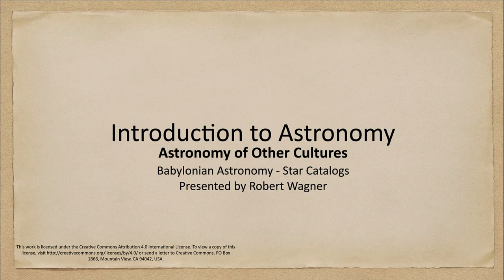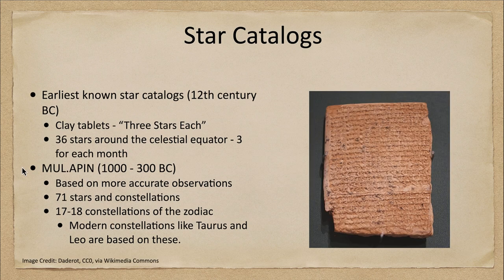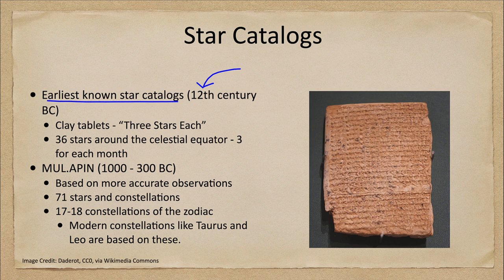Greetings and welcome to the introduction to astronomy. In this week's astronomy of other cultures lecture, we are going to continue talking about Babylonian astronomy and specifically look at the star catalogs that the Babylonians developed. These give us some of the very earliest known star catalogs, dating back to the 12th century BC — over 3,000 years ago.